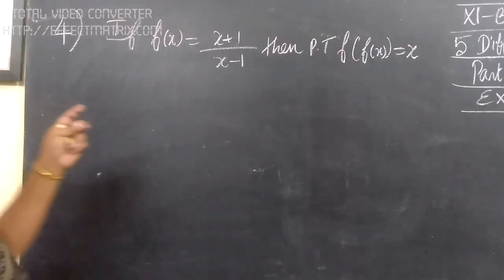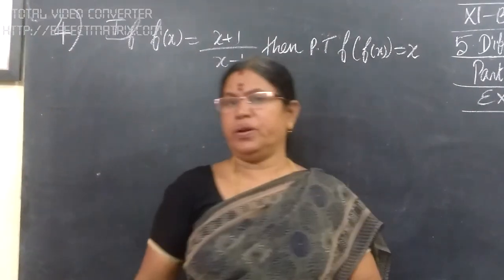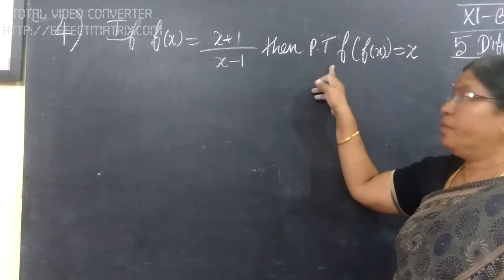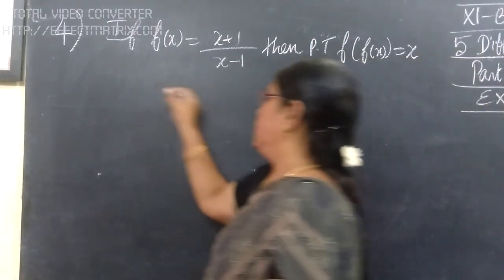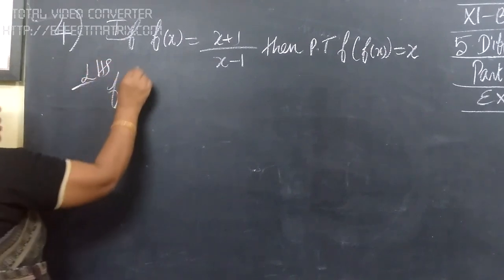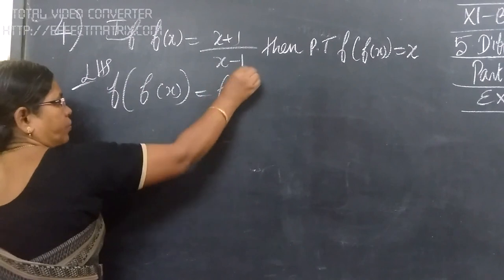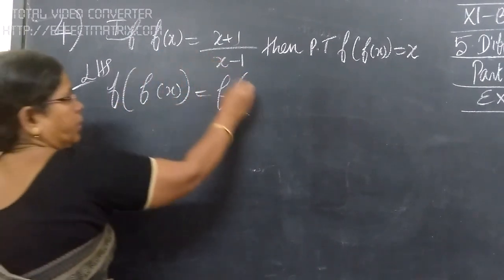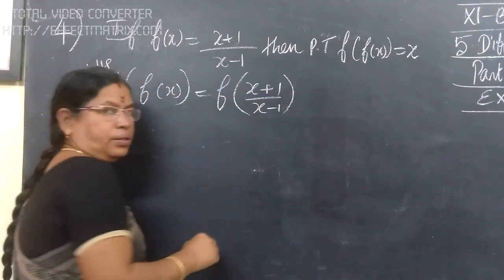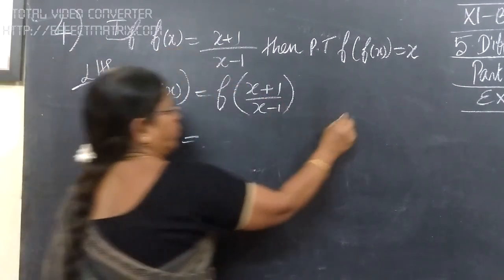Next one: f of x equals x plus 1 by x minus 1, and we want to prove f of f of x equals x. So we consider f of f of x, which equals f of x plus 1 by x minus 1.